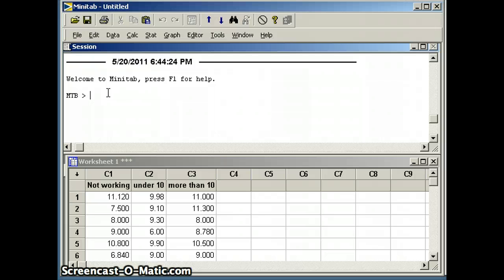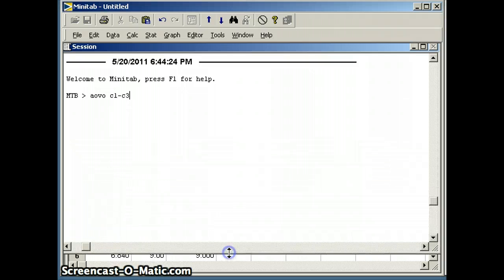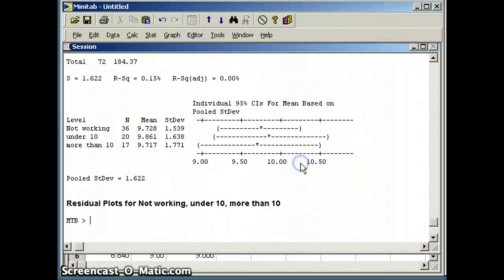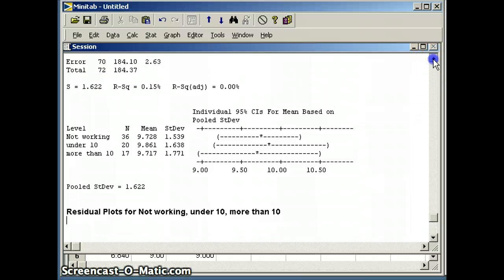Now we want to go ahead and do our analysis of variance. A-o-v, one way, and then our data is in C1 through C3. And what will that give us? And again, we will get rid of the pictures, not terribly concerned about that. And we'll take a look at our output.